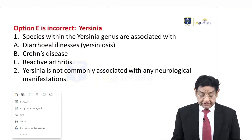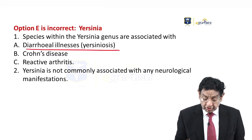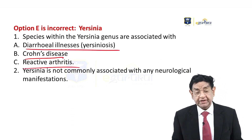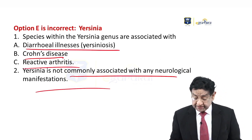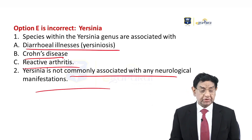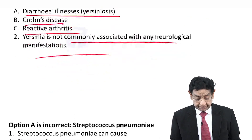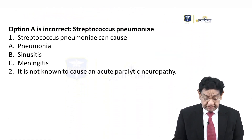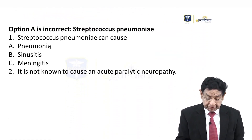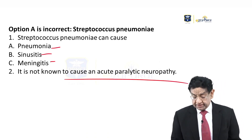Looking at other options: Yersinia is associated with diarrhea — so-called Yersiniosis — Crohn's disease, or reactive arthritis. It is not associated with neurological features or a GBS-like picture. Streptococcal pneumonia is another option; it can lead to pneumonia, sinusitis, and meningitis, but again it is not a cause of paralytic neuropathy.